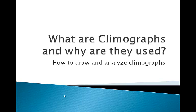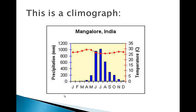This is a climograph. A climograph consists of two graphs in one. The purpose of a climograph is to demonstrate average climate conditions, particularly involving precipitation and temperature. Notice along the bottom horizontal axis there are a series of letters. These 12 letters represent the months of the year, starting with January and ending in December.